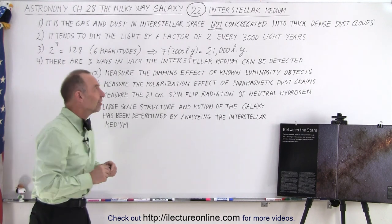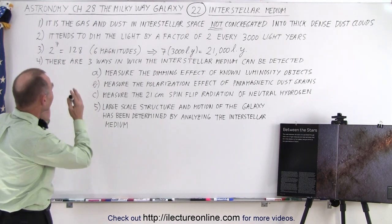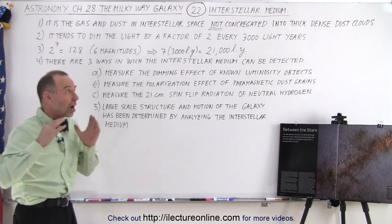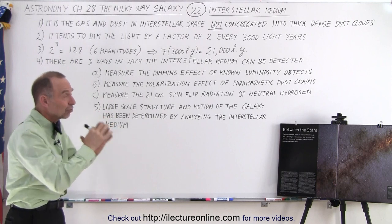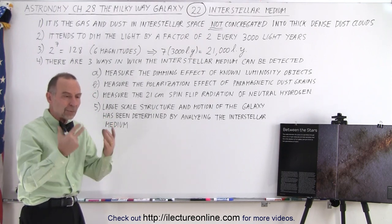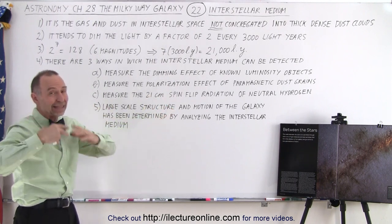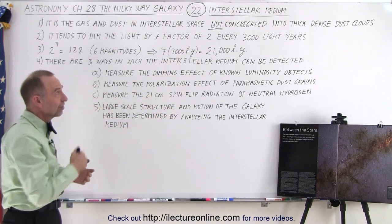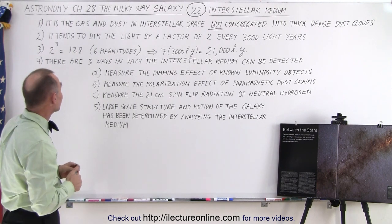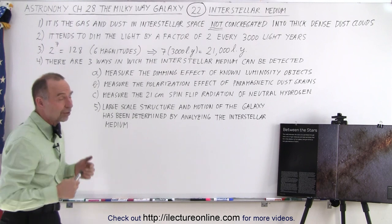The interstellar medium is simply the gas and dust in interstellar space, not congregated into thick, dense dust clots — those are what we discussed in the previous video. Here we're talking about the rarefied material that's everywhere, not nearly as dense as the dense dust clots — a very small fraction of that density. It tends to dim light by a factor of 2 every 3,000 light years.